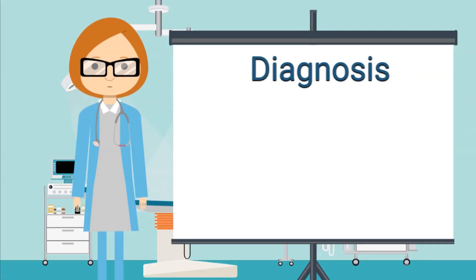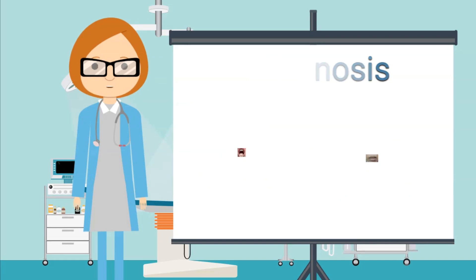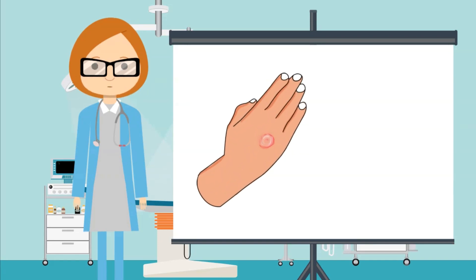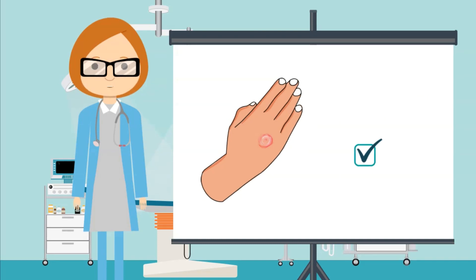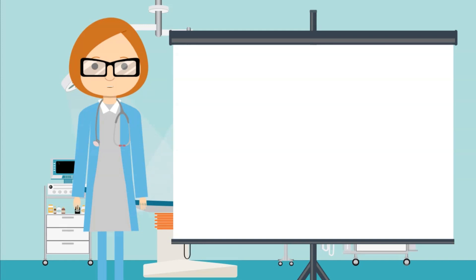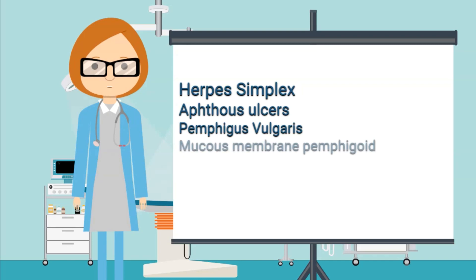The diagnosis is usually made based on clinical features; however, histopathological features can be used as an adjunct to exclude and distinguish between other skin lesions such as pemphigus. When target skin lesions are present, the clinical diagnosis is usually straightforward. However, in the absence of these lesions, several possibilities including herpes simplex, aphthous ulcers, pemphigus vulgaris, mucous membrane pemphigoid, and erosive lichen planus should be considered.